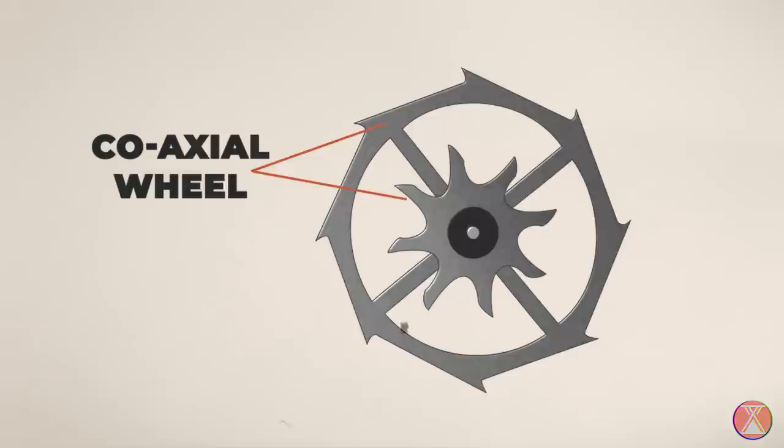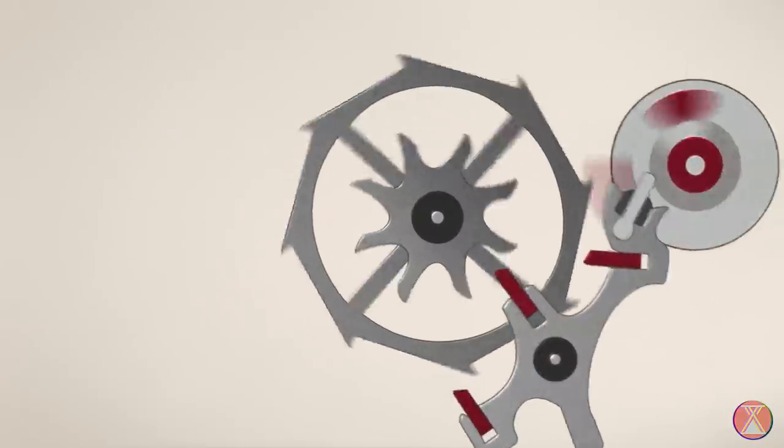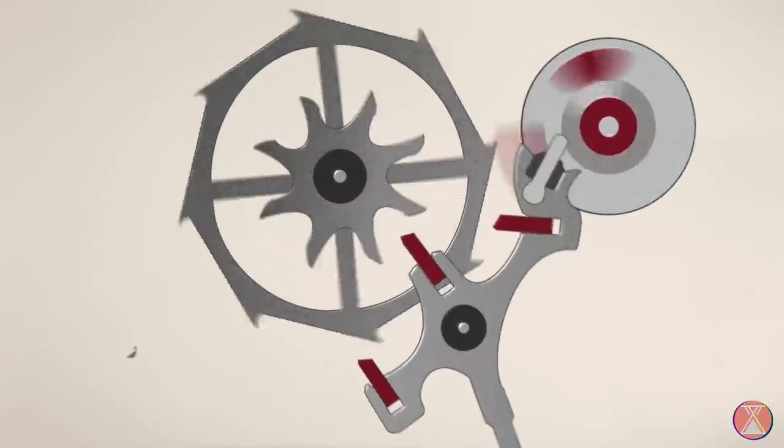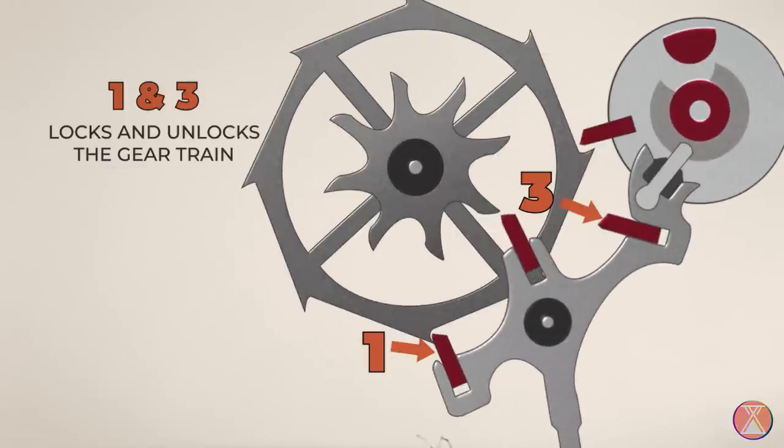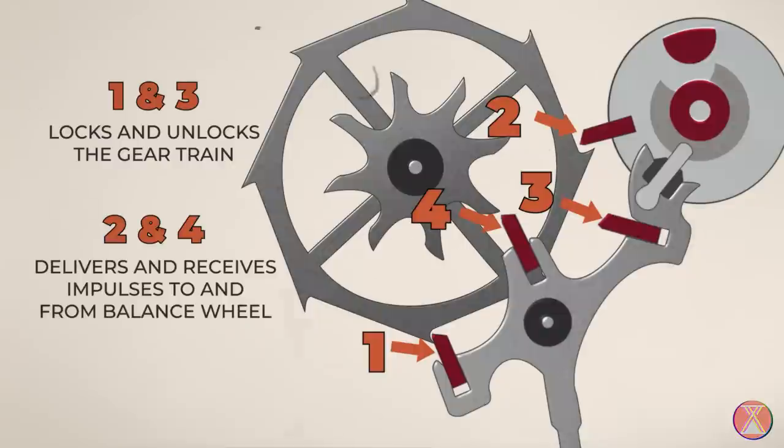As we discussed, the coaxial wheel consists of two wheels sharing an axis. Each wheel then interacts with a pair of pallet stones. Stones numbered one and three will lock and unlock the gear train, while stones two and four will deliver and receive impulses to and from the balance wheel.